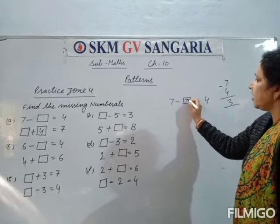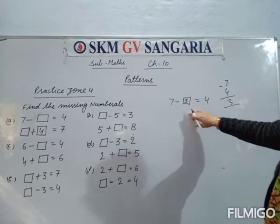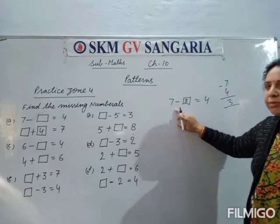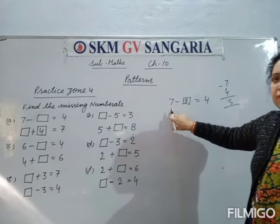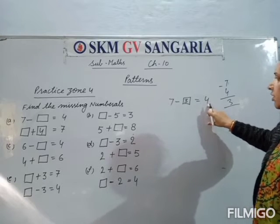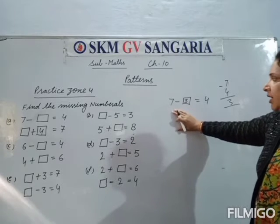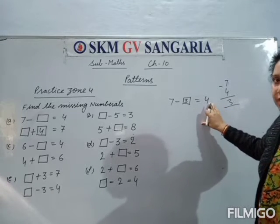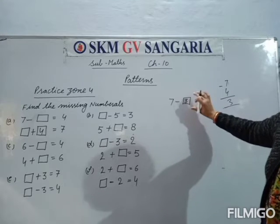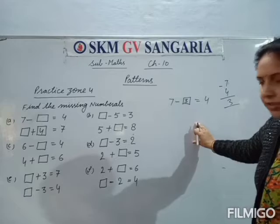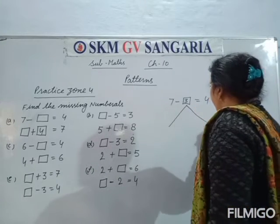Toh yahaan kya ho jayega hamaara? 3. Yeh hamaara 7th — 7 hamaara bigger number hai. Difference hamaara already diya hua hai. Toh yeh dekhe ki 7 minus 4 — jo hamaara first digit hai, jo bigger number hoga — jabh hum us mein se difference ko minus karenge. Toh yeh kya hai hamaara? Yeh hai hamaara subtraction fact. Ab jo subtraction fact hai, voh two facts rakhta hai.